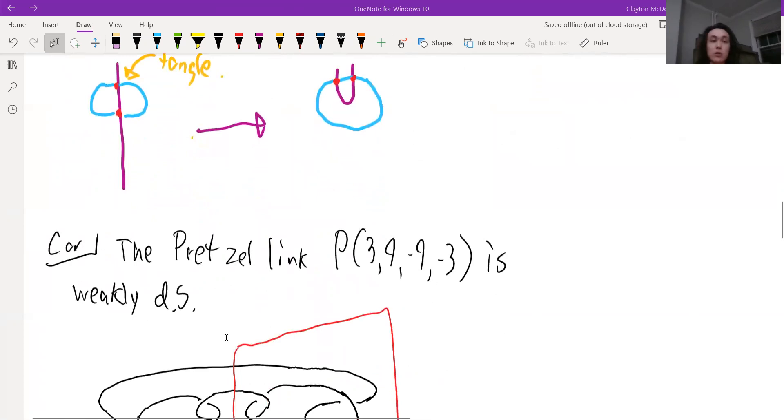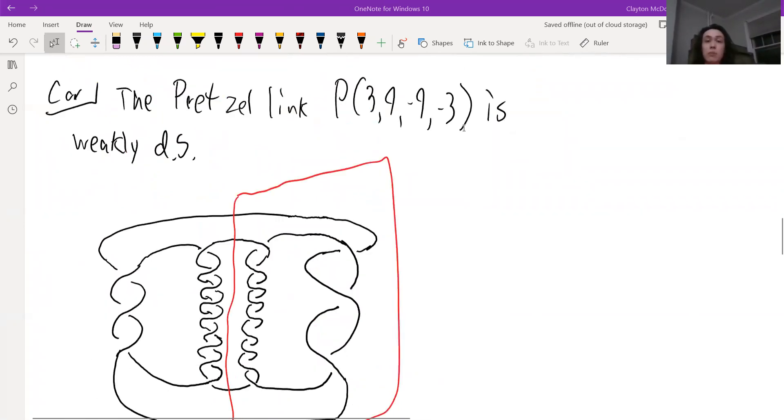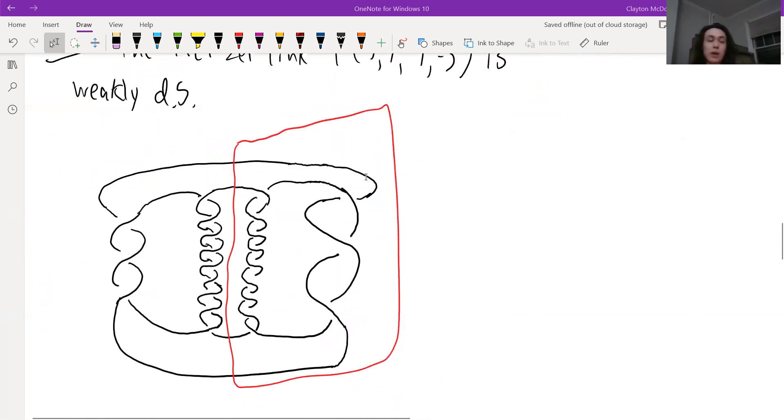Okay, so as a corollary of this, we see that this particular link, the pretzel link P(3, 9, -9, -3) is weakly doubly slice. In particular, we can see that we're kind of doubling this tangle on the right. And in particular, this link is going to be not strongly doubly slice.